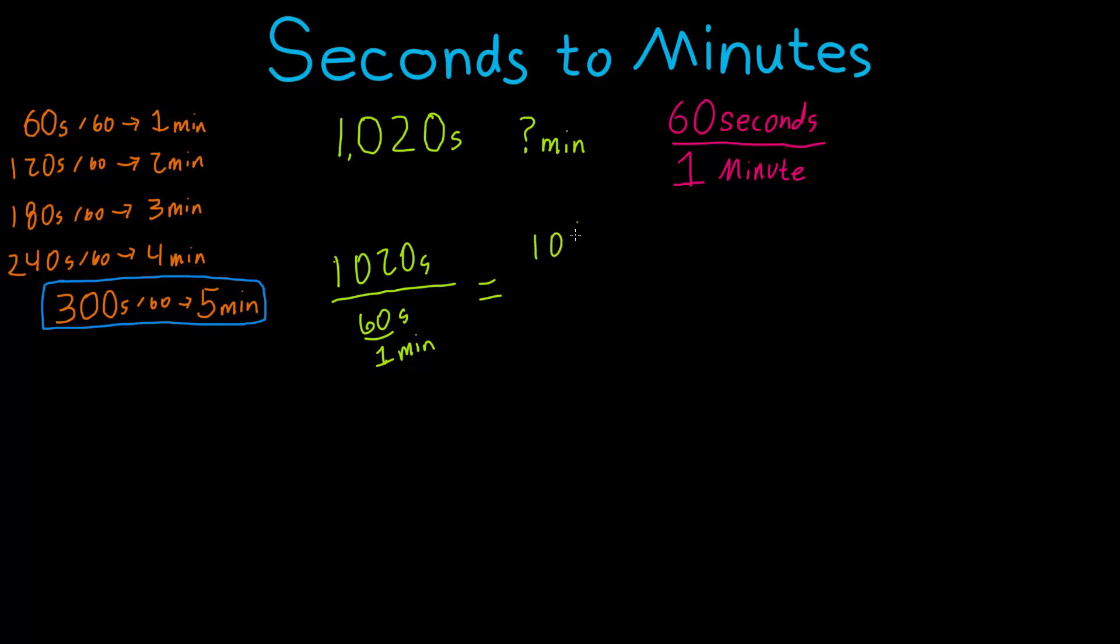And this is going to end up being something. This is also the same as just saying 1020 divided by 60. This is an easier way to look at it if you're just trying to do the math. From an engineering standpoint, we like to use the units, but this will still get you the same answer.